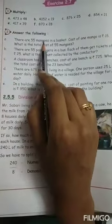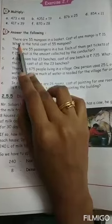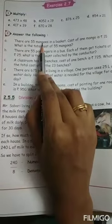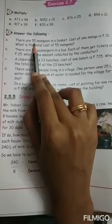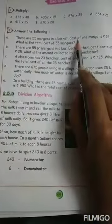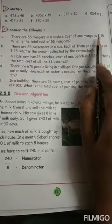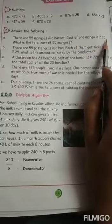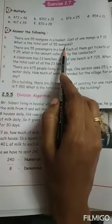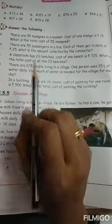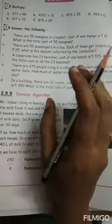There are 55 mangoes in a basket. What they have given? There are 55 mangoes in a basket. In one basket how many mangoes were there? 55. Cost of one mango is rupees 15. What is the total cost of 55 mangoes? Cost of one mango is given. You have to find for 55 mangoes.